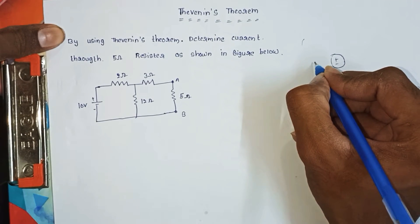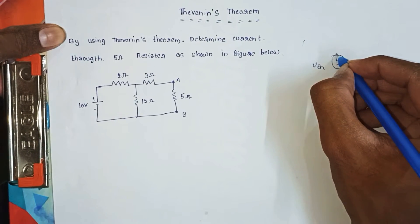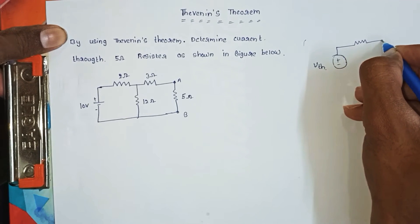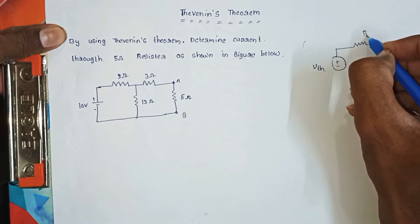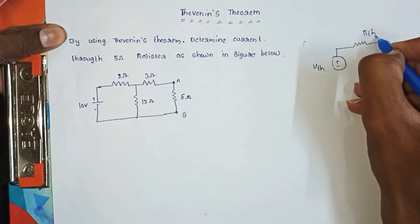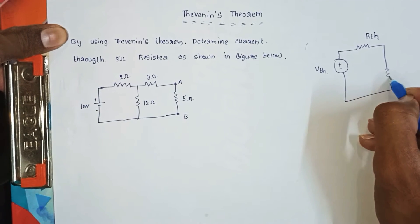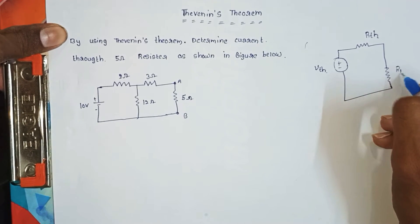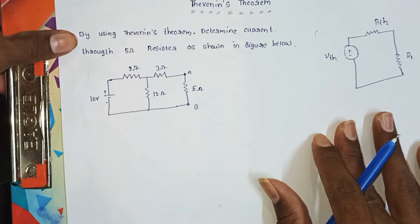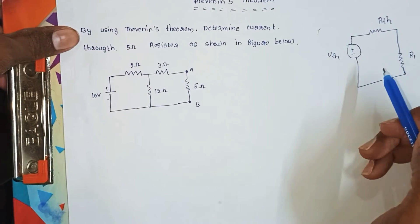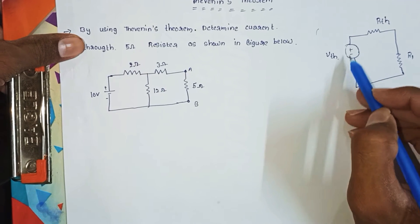The Thevenin equivalent circuit consists of a voltage source VTH plus/minus, which is the Thevenin voltage source, in series with resistance RTH. Any linear bilateral network can be replaced by this equivalent voltage source VTH in series with resistance RTH.